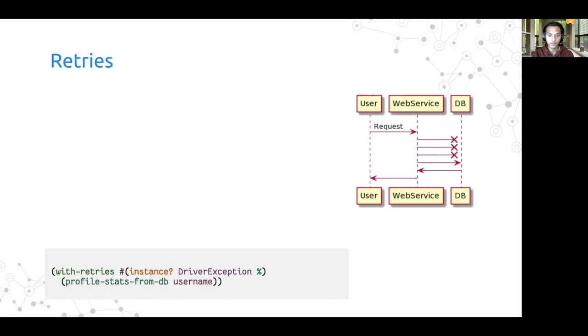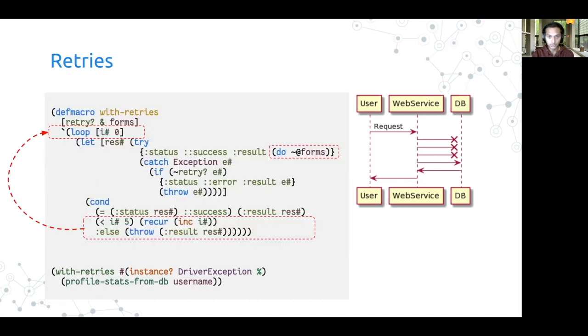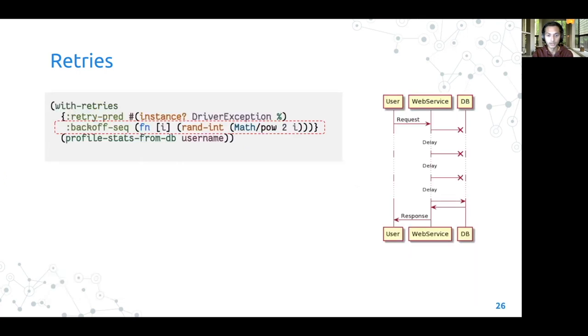This macro takes a failure predicate that returns true if the exception is retriable. This small example underscores the expressivity that closure provides with the help of passing functions as first-class arguments and makes the code base very modular and readable. The macro itself takes a failure predicate as the first argument and some forms. We execute these forms inside a loop recur where we rerun the forms if the exception that satisfies the retried predicate fails for five times or we throw the exception back to the caller if the failure happens for the sixth time after all the retries have been exhausted. Retries can be configured to be more versatile as well. In this example, we are extending the with retries macro to accept a map of options that include a backup sequence now.